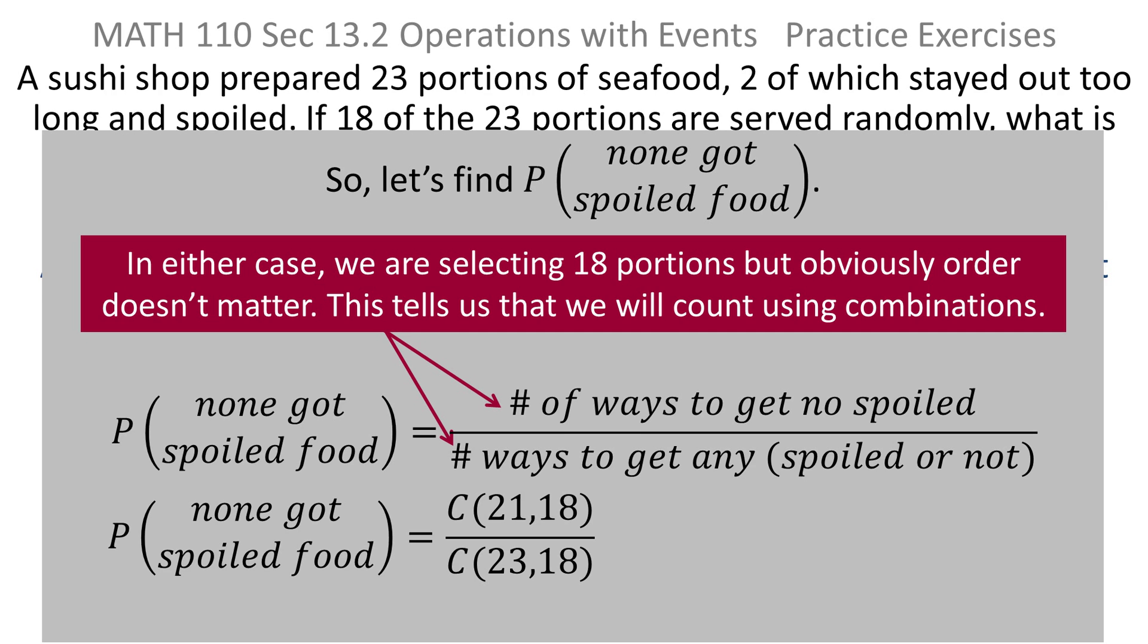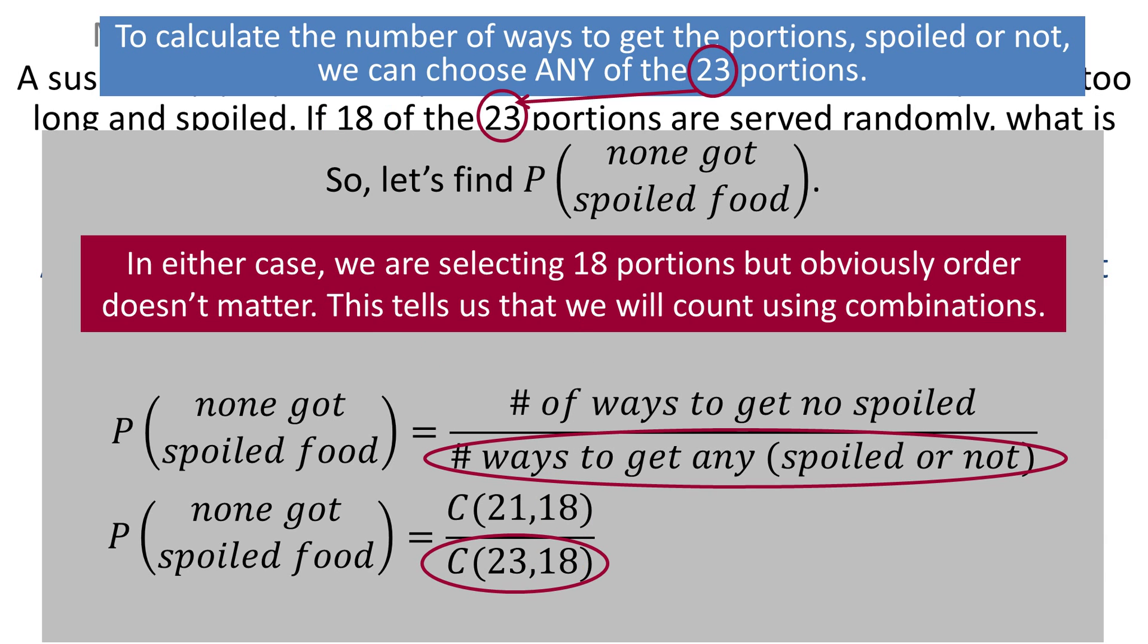Now this is the hint in the previous problem with new numbers and a slightly different situation, but it's basically the hint from the last exercise. But you can see now how that came about. We're choosing 18 portions, so that's why there's an 18 in both positions. The denominator is the number of ways to get any, whether it's spoiled or not. And that's why there's a 23 here, because there are 23 portions in all, and if you don't care if they're spoiled or not, then you can choose any 23 of them.